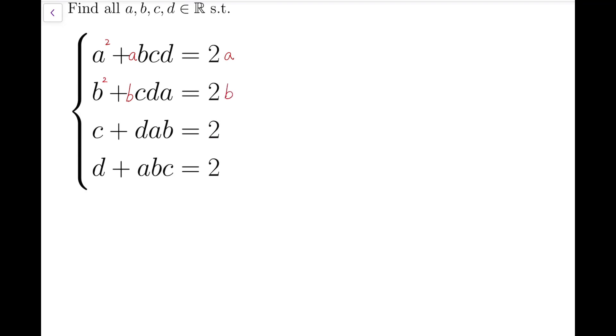Now notice that these two terms are actually equal. And these two quadratic equations about a and b are of the same form. So this inspires us to do similar things on the other two equations as well. Which means c squared plus dabc equals 2c, and d squared plus abcd equals 2d.